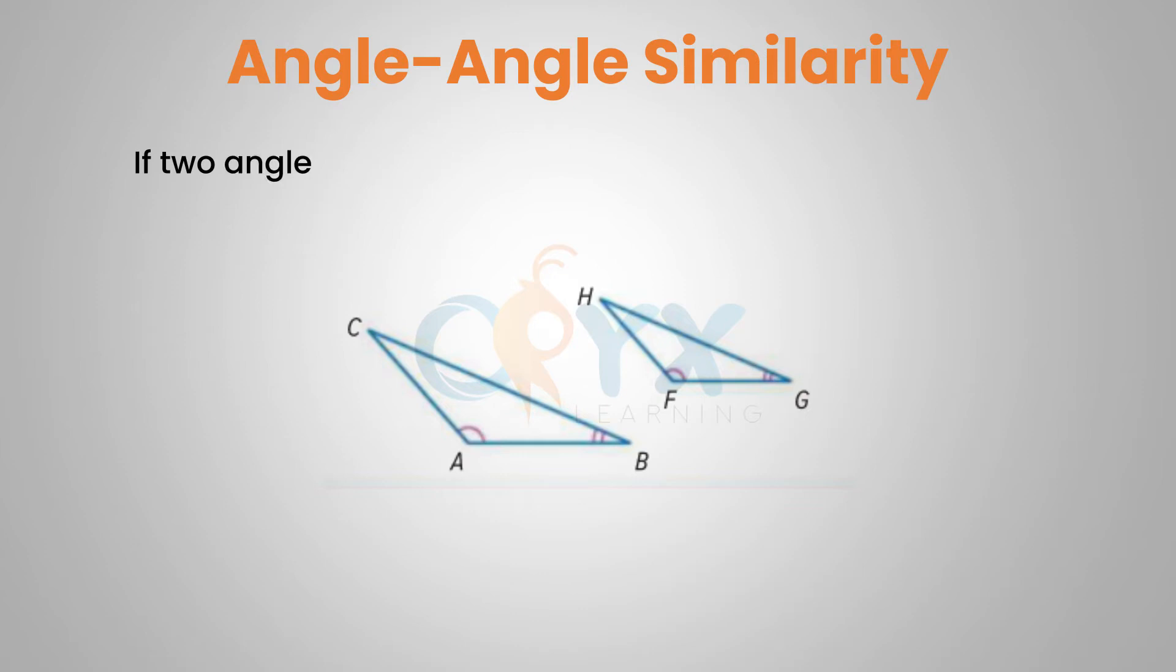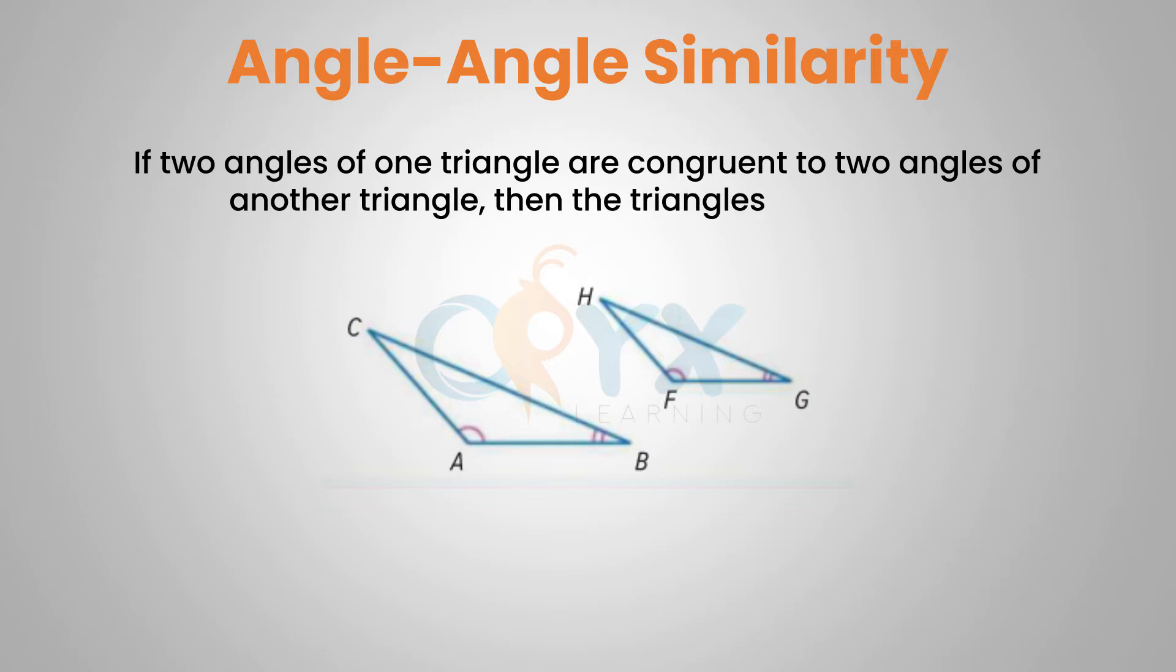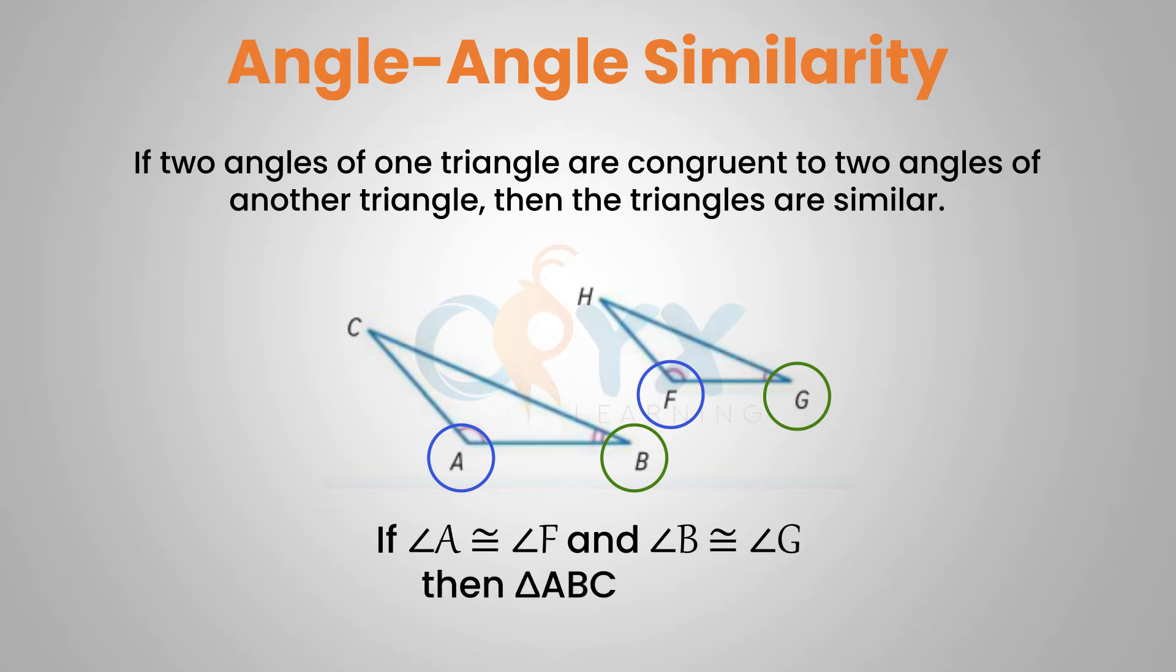If two angles of one triangle are congruent to two angles of another triangle, then the triangles are similar. So in the diagram, if angle A is congruent to angle F and angle B is congruent to angle G, then triangle ABC is similar to triangle FGH.